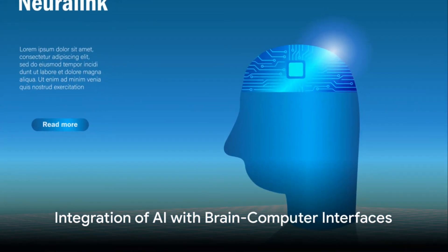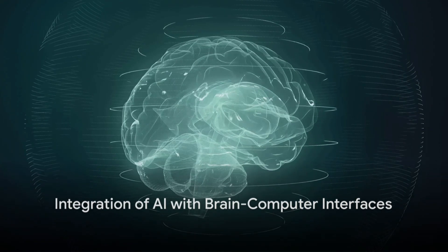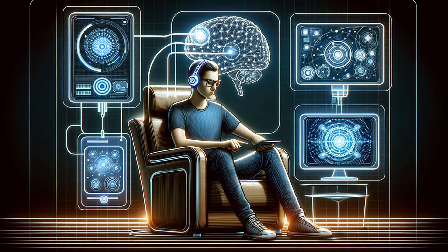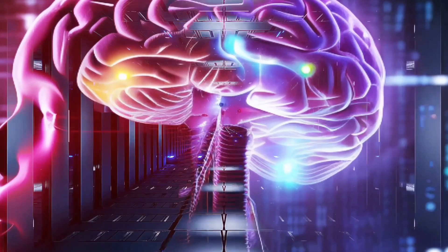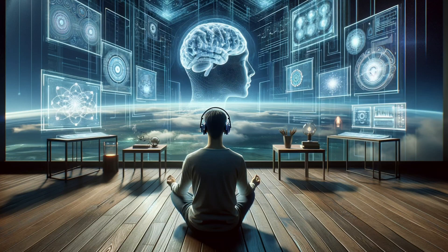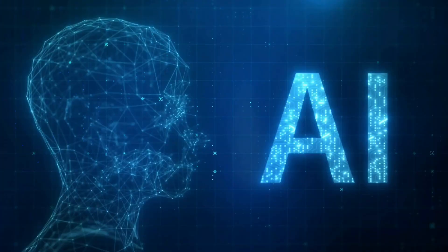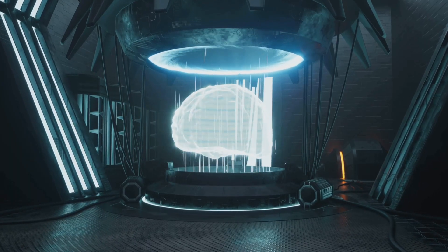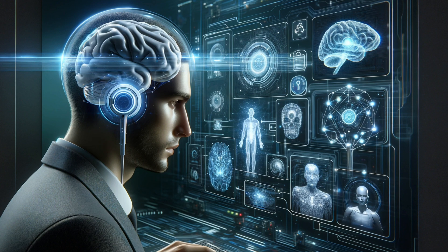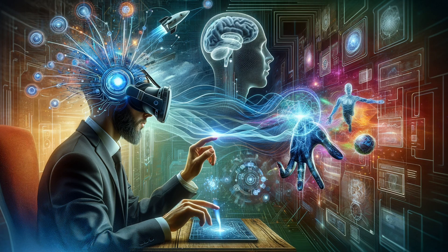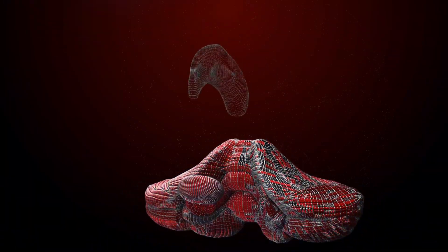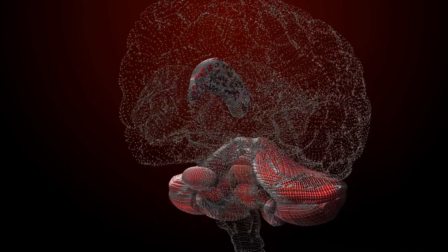Both Neuralink and Synchron's Stentrode are at the forefront of integrating AI with brain-computer interfaces. This combination opens up extraordinary possibilities. AI algorithms can interpret the complex neural patterns detected by these devices, translating thoughts into actions. The more advanced the AI becomes, the more nuanced and precise this interpretation will be. This synergy between brain-computer interfaces and AI could redefine human interaction with technology and even expand our understanding of the human brain.